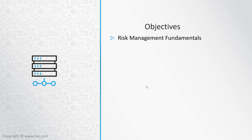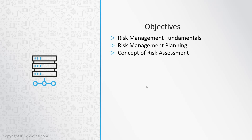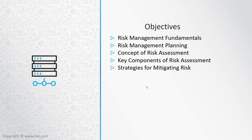Let's take a look at the objectives for this particular domain. First, we'll begin by defining and describing what risk management fundamentals are. The next objective is risk management planning. Then we'll look at the concepts and key components of risk assessment, followed by strategies for mitigating risk — finding a process by which we can minimize the impact of various risks. A risk, as we noted, is a tolerable uncertainty: it's always present, it can be altered, but it can never be totally eliminated. The last topic we'll examine is the risk registry. With all that being said, let's get started.